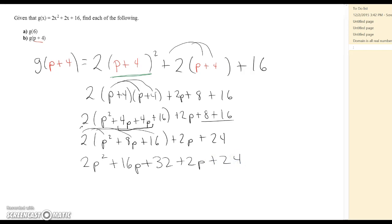And now what can we combine as far as like terms go? Well, I take a look and I see I have a 16P and a 2P. Those are going to become 18P. So it's going to be 2P squared.